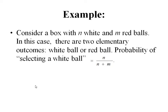In order to understand this particular definition of classical probability, we hereby consider an example. Consider a box with n white balls and m red balls.